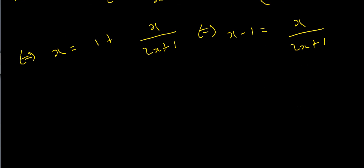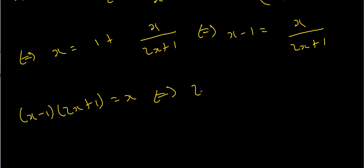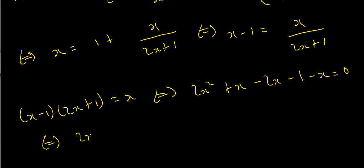Multiplying both sides by (2x + 1) gives (x − 1)(2x + 1) = x. Expanding and collecting all terms to one side: 2x² + x − 2x − 1 − x = 0, which simplifies to 2x² − 2x − 1 = 0. Now we have a quadratic equation, and we can solve it using the quadratic formula.